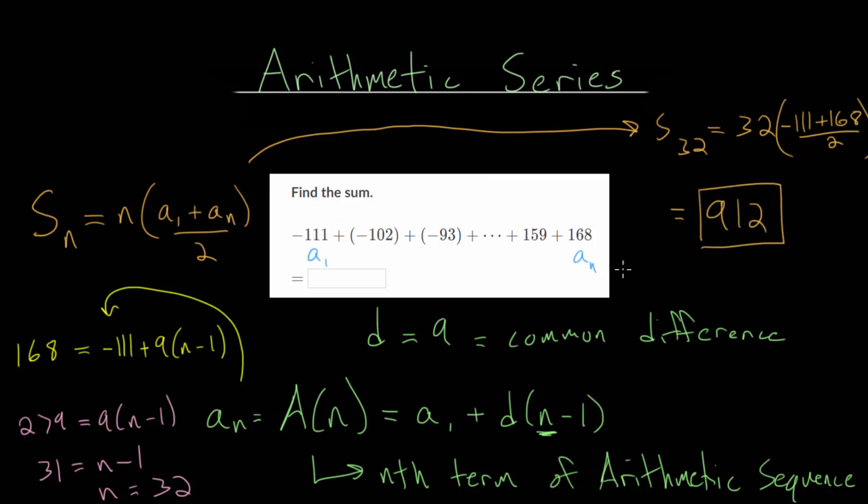And of course, you could do this by hand, but it's fairly tedious. If you want to check your work that way, you certainly can. But the formula definitely works as long as you get the correct n value and the first value and the last value. So we can put 912 into our box here.